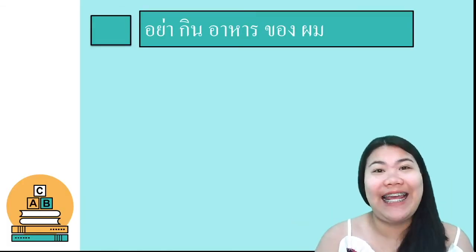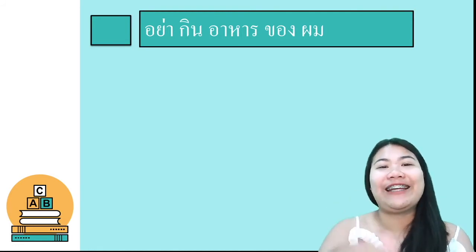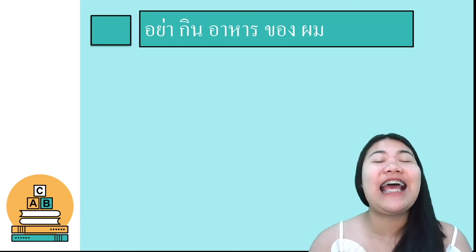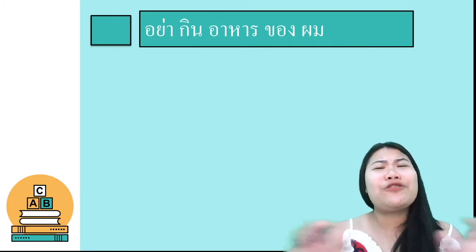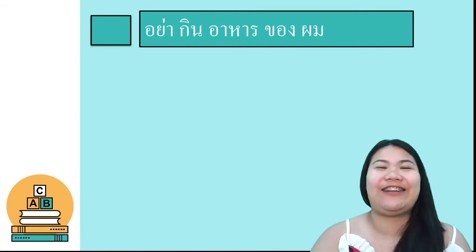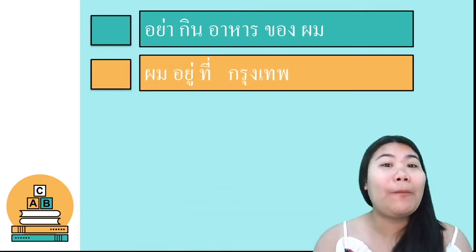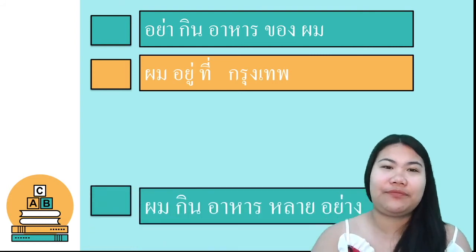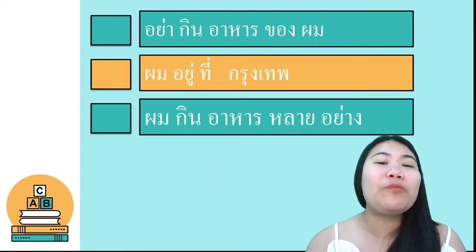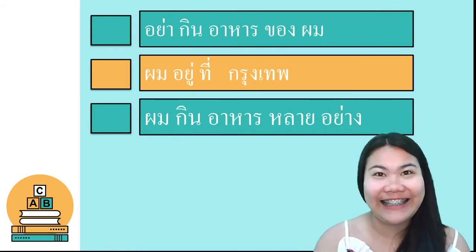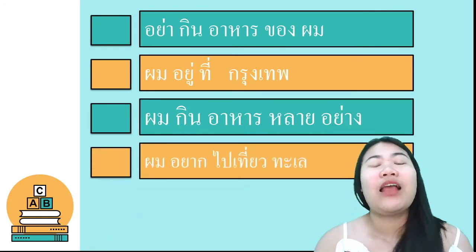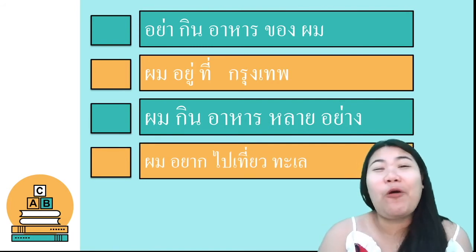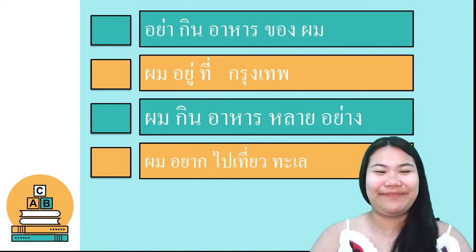Now it's your turn to read the sentence. This sentence is อย่ากินอาหารของผม — don't eat my food. Next practice sentences: ผมอยู่ที่กรุงเทพ — I live in Bangkok. ผมกินอาหารหลายอย่าง — I eat many types of food. ผมอยากไปเที่ยวทะเล — I want to take a trip to the sea.